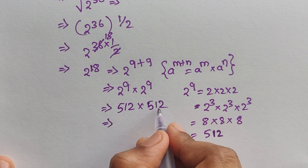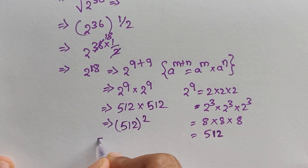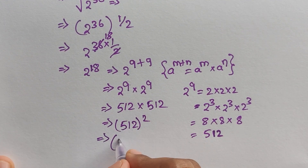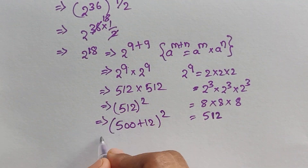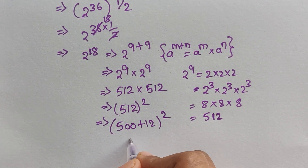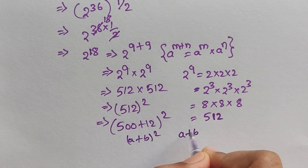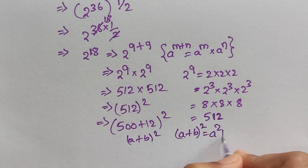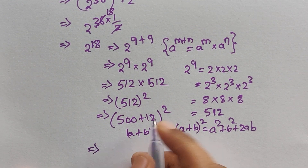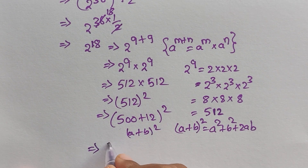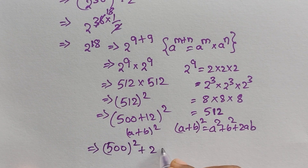So 2^18 equals 512 times 512, which we write as 512 whole squared. Now 512 can be written as 500 plus 12, to the power of 2. This is in the form of (a + b)^2. We know the formula: (a + b)^2 equals a^2 plus 2ab plus b^2.